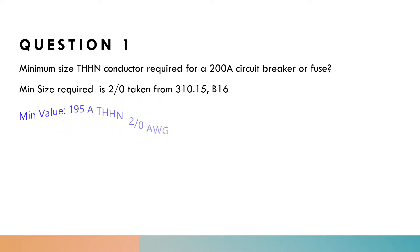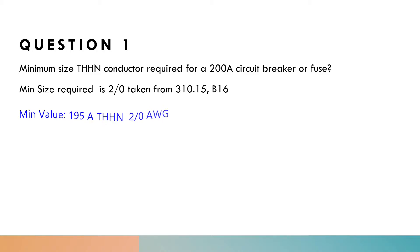We only get 195 amps, but if we go back to Article 240.5, we understand that when sizing conductor for less than 800 amperes, the breaker size can somewhat be greater than the ampacity of the conductor. However, the value is always within proximity or closest to the value of that circuit breaker.